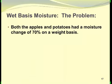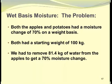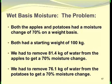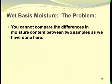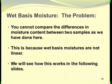Both the apples and potatoes had a moisture change of 70% on a wet basis, and both had a starting weight of 100 kilograms. Yet we had to remove 81.4 kilograms of water from the apples but only 76.1 kilograms from the potatoes for a similar 70% moisture change. You cannot simply compare differences in moisture content between two samples, because wet basis moistures are not linear. We will see how this works in the following slides.